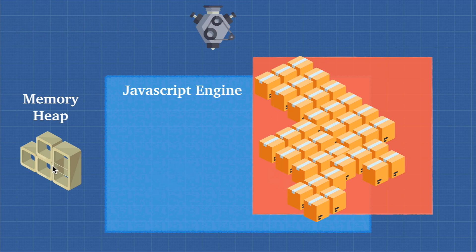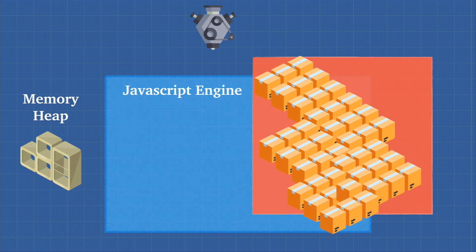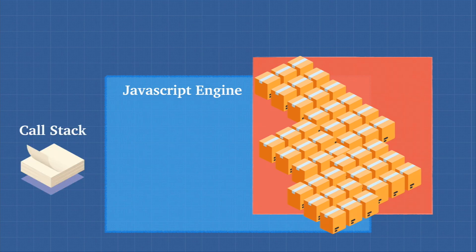There's no order to this memory — it just allows us to use variables to point to different storage areas, like little cupboards. A lot of science goes into optimizing how space is allocated, but the engine takes care of that for us. Memory heap is not that hard — it's just a place to store our information. What about the call stack — how does that help us?